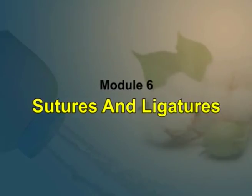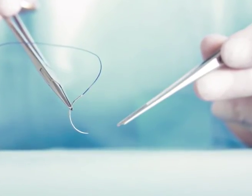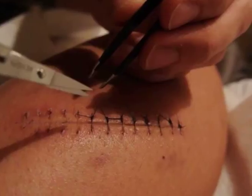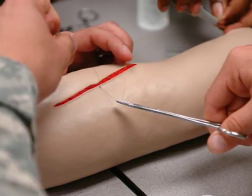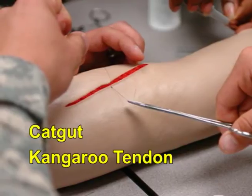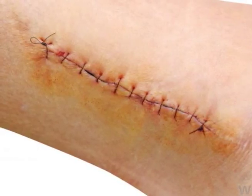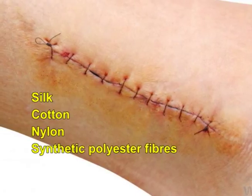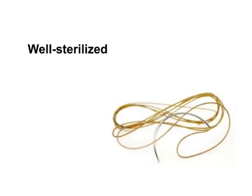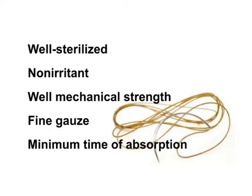Module 6. Sutures and ligatures. A surgical suture is a thread or string used for sewing or stitching together tissues, muscles and tendons with the help of a needle. If these threads or fibres are used to tie blood vessels to stop bleeding without a needle, they are digested in animal tissues — for example, cat gut and kangaroo tendons. If the sutures are not absorbed in the body, they are called non-absorbable sutures — for example, silk, cotton, nylon, synthetic polyester fibres and stainless steel wire. A good quality suture should be well sterilised, non-irritant, have well mechanical strength, fine gauge and a minimum time of absorption.